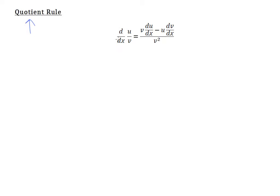The quotient rule is used to differentiate a fraction. A fraction has a top part — the numerator — and a bottom part — the denominator. We shall codename them as top and bottom. According to the formula, you keep the bottom and differentiate the top. du/dx refers to the derivative of u with respect to x. Then minus away: you keep u and differentiate v, which is the bottom. The entire thing is divided by the bottom squared.